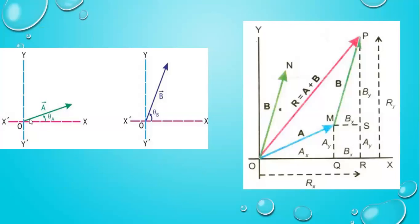In the diagram, point O and point M are identified. This is point M. The angle theta_A is marked for vector A, and theta_B is the angle for vector B.